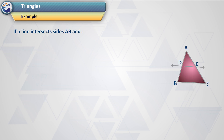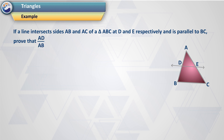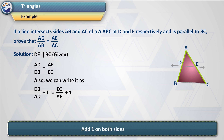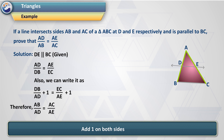Example: If a line intersects sides AB and AC of a triangle ABC at D and E respectively, and is parallel to BC, prove that AD/AB = AE/AC. Solution: DE is parallel to BC (given), so AD/DB = AE/EC. We can rewrite this as DB/AD = EC/AE. Adding 1 to both sides: DB/AD + 1 = EC/AE + 1, giving (DB + AD)/AD = (EC + AE)/AE, that is AB/AD = AC/AE. Therefore, AD/AB = AE/AC.